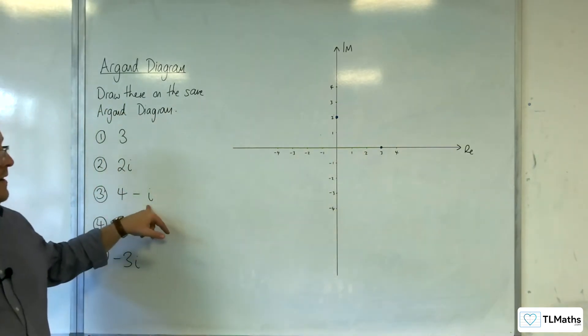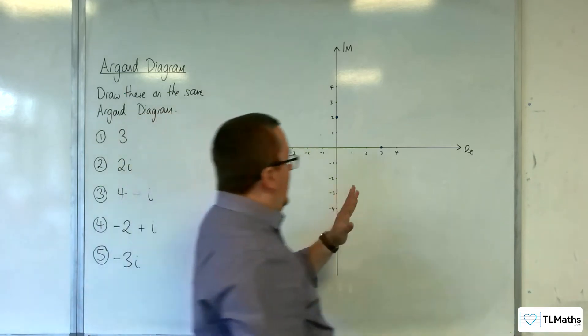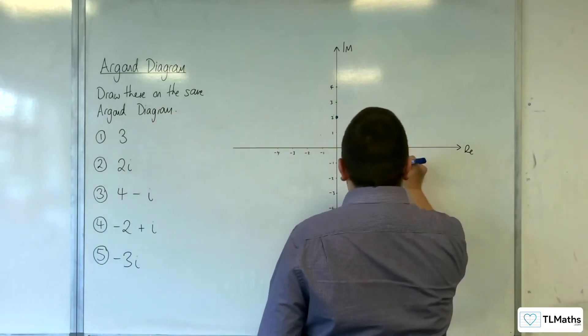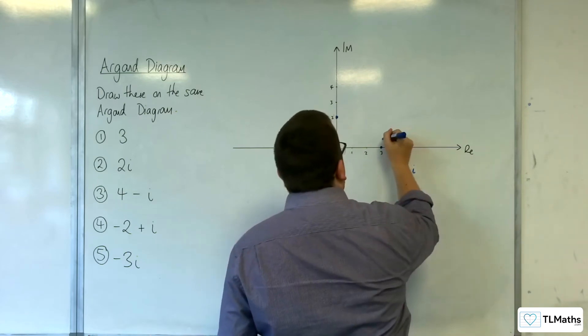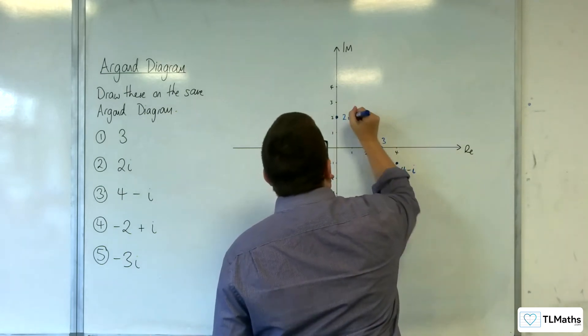Four take away i, so four along and one down. That would be four take away i. So there's three, there's 2i.